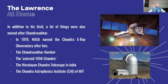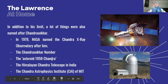In addition to his limit, a lot of things were also named after Chandrasekhar. In 1979, NASA named the Chandra X-ray Observatory after him. It is currently in space and taking pictures in X-ray for us. And then there's also the Chandrasekhar number. They also named an asteroid after him — Asteroid 1958 Chandra. There's also the Himalayan Chandra Telescope in India, and the Chandra Astrophysics Institute, or CAI, that was owned by MIT.